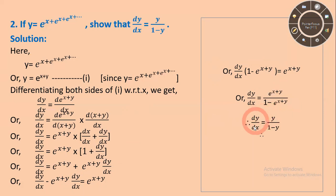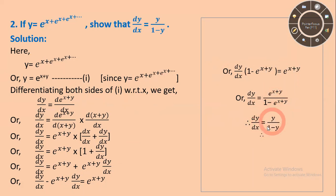Since y equals e^(x plus y), we can substitute to get dy/dx equal to y upon (1 minus y). This is the final answer for this example.